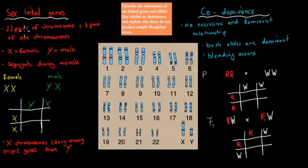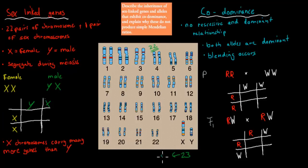I'll go over sex-linked genes first. Usually we have 22 pairs of chromosomes, but we have an additional 23rd pair, and these are our sex chromosomes. So we have an X and a Y chromosome, and these together are our sex chromosomes. So we have 22 pairs of chromosomes, and then we have that additional pair of sex chromosomes, which determines what sex we become.